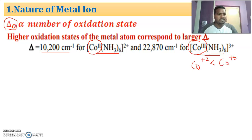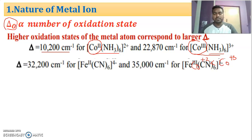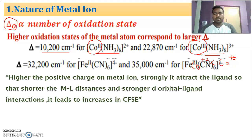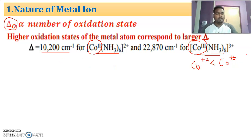Why does this happen? Higher the positive charge, what happens? In cobalt +2 and cobalt +3, the size of cobalt +3 is less than the size of cobalt +2. The one having a higher positive oxidation state has a very small size.